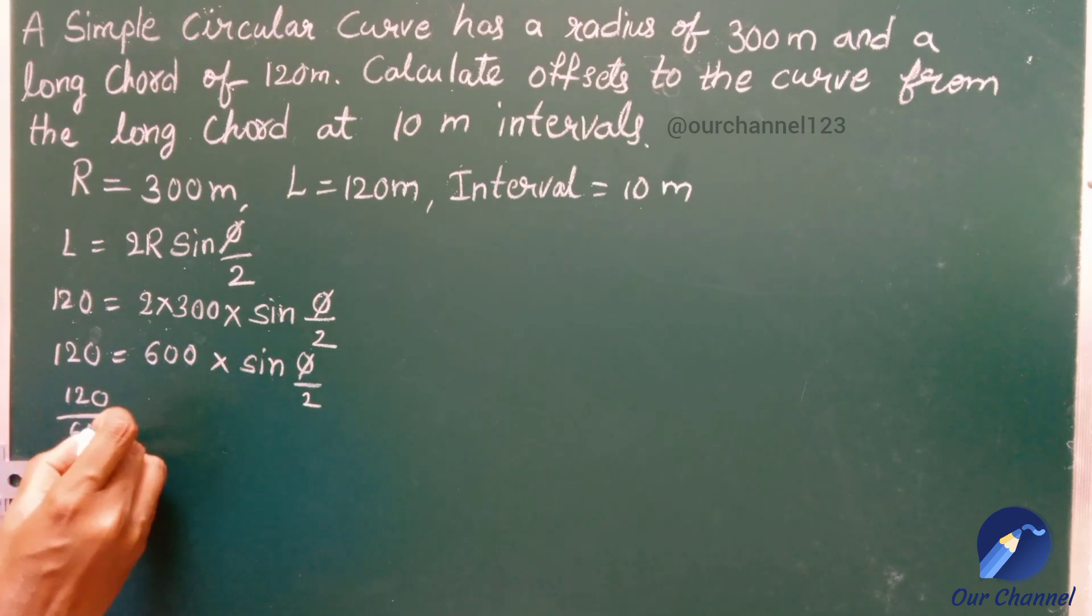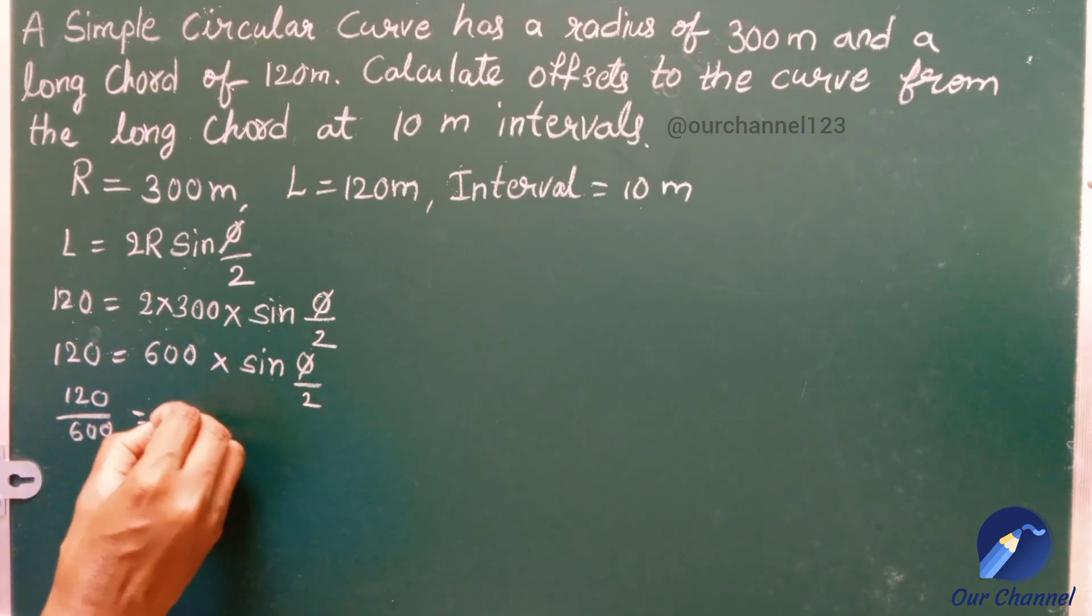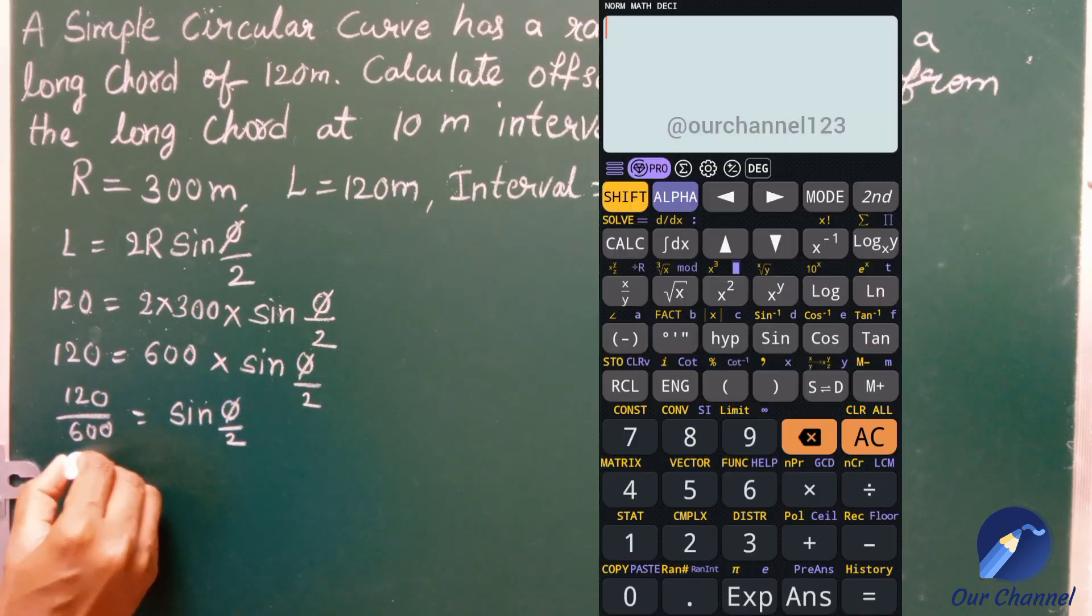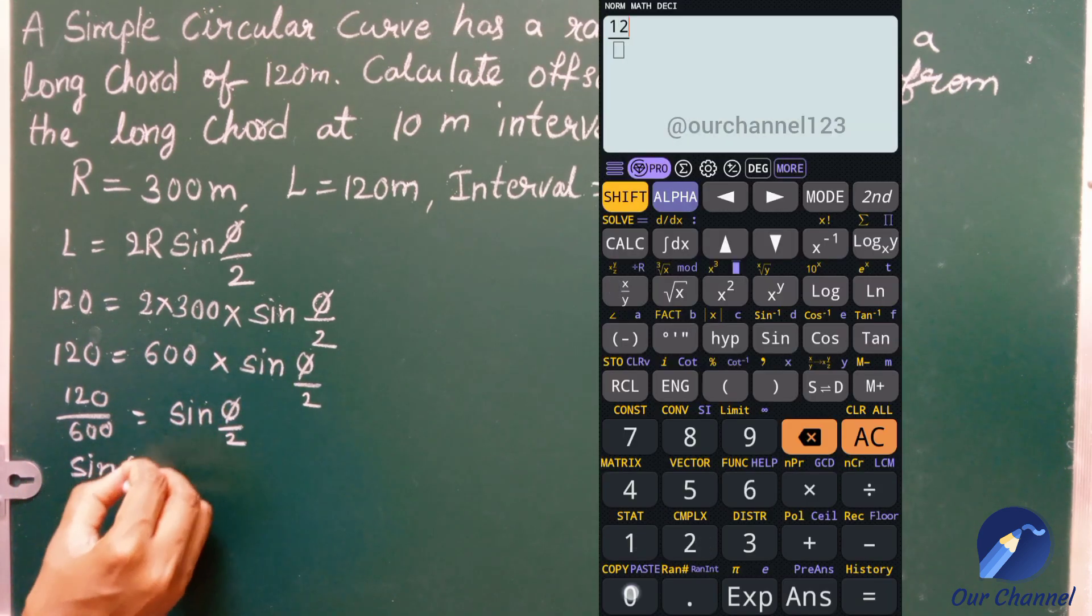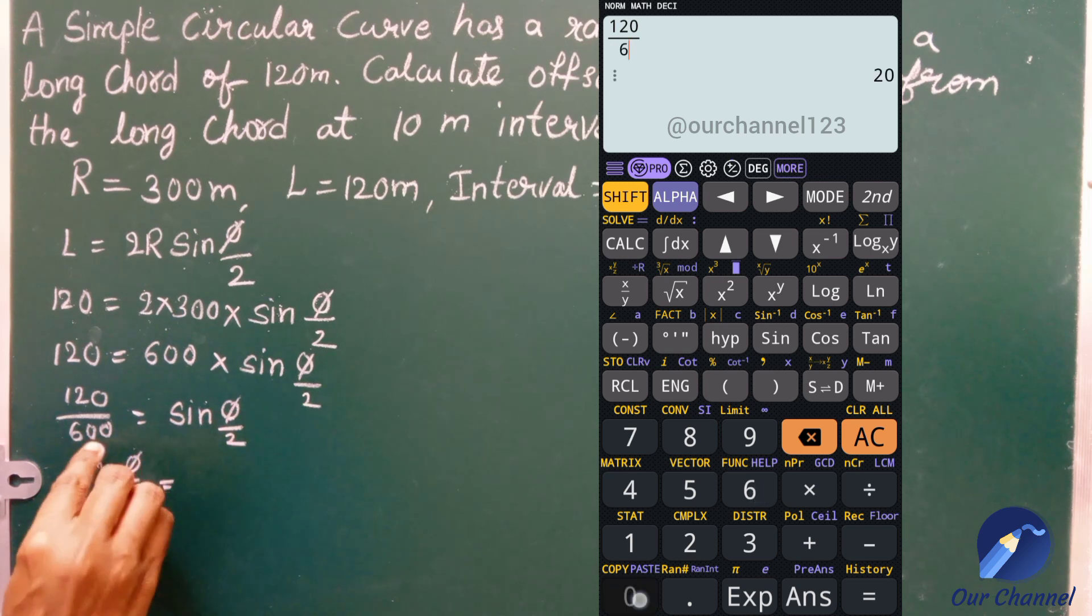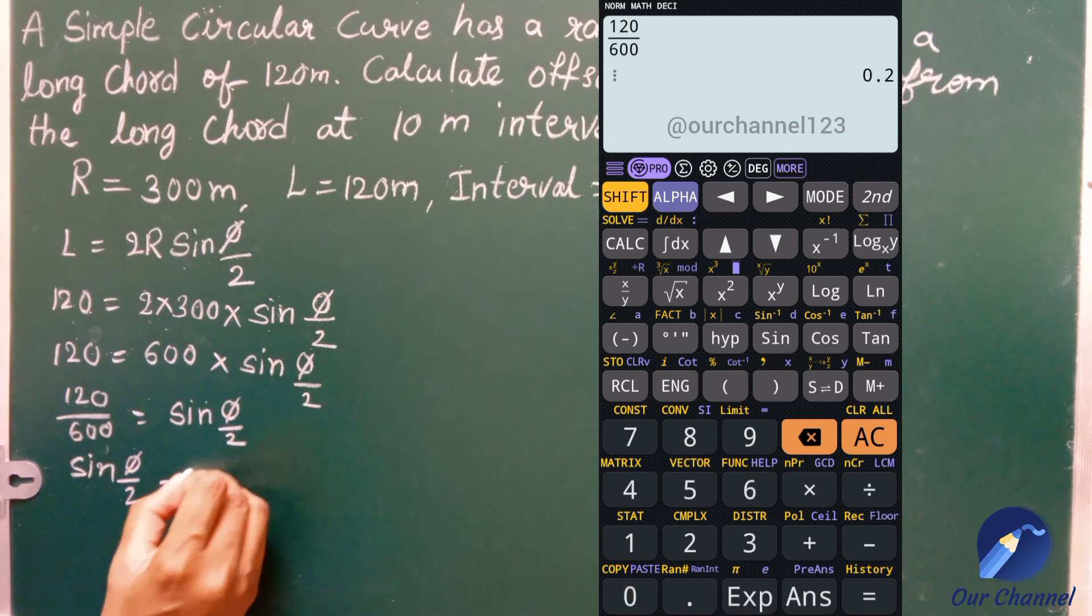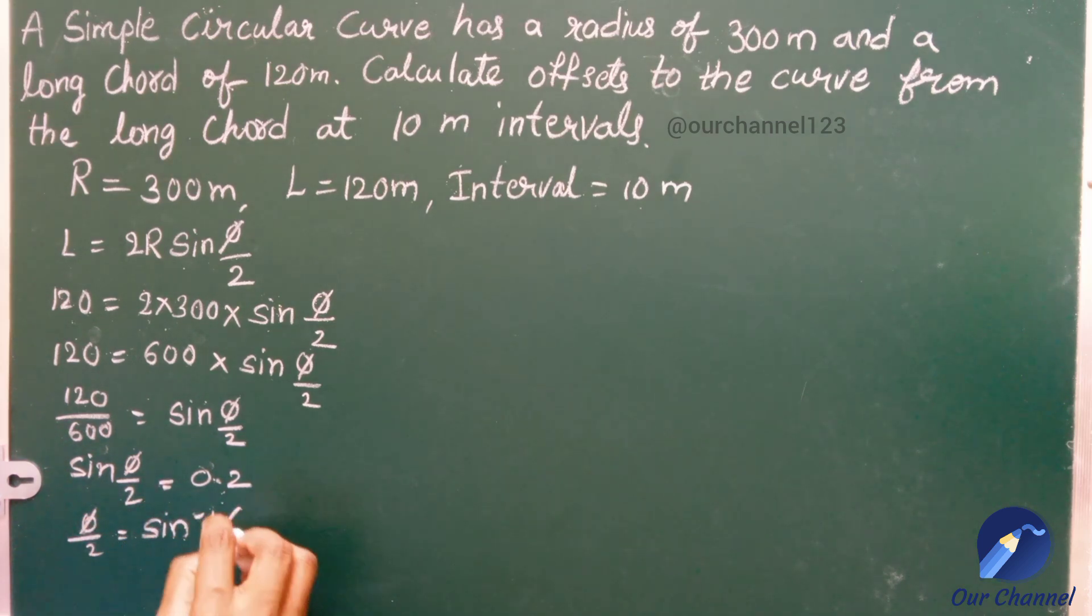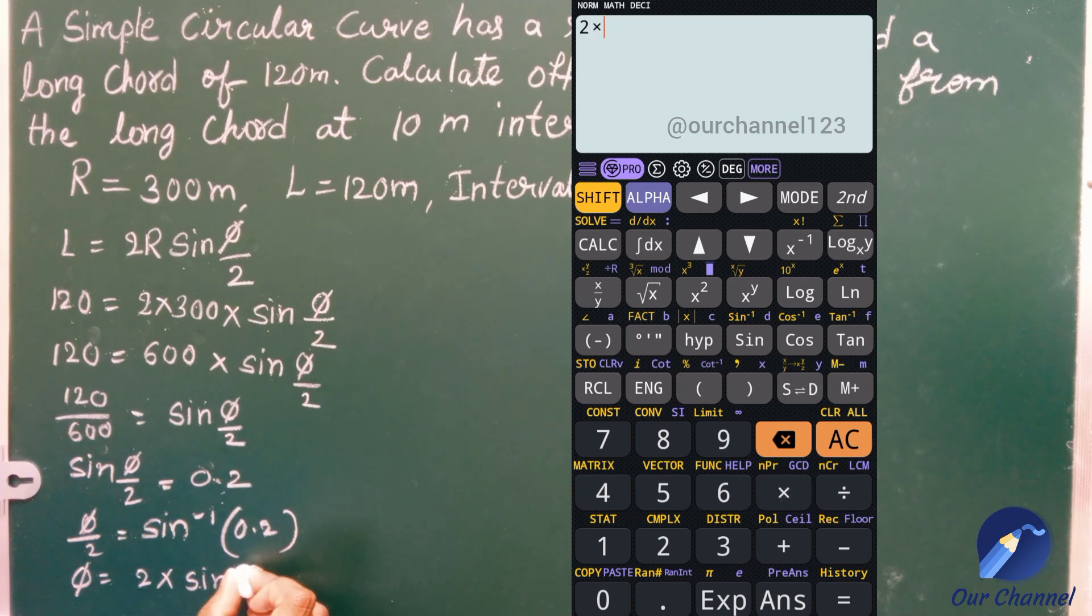120 by 600 is equal to sin θ/2. Sin θ/2 is equal to 120 by 600 that is 0.2. θ/2 is equal to sin inverse of 0.2. θ is equal to 2 into sin inverse of 0.2.